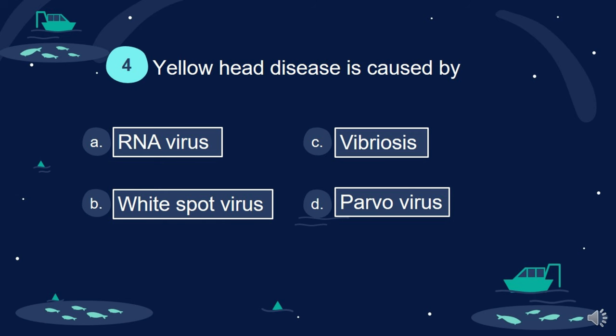Question 4. Yellowhead disease is caused by: A. RNA virus. B. White spot virus. C. Vibriosis. D. Parvo virus.